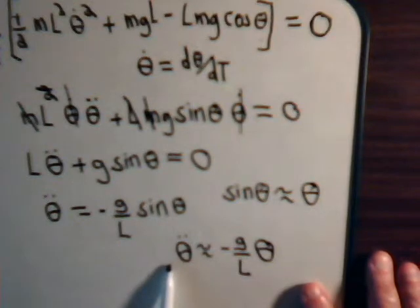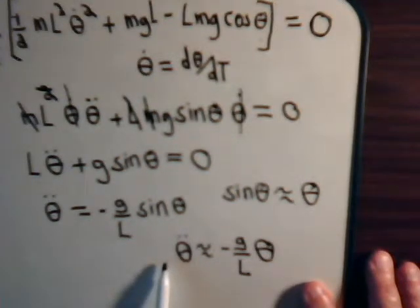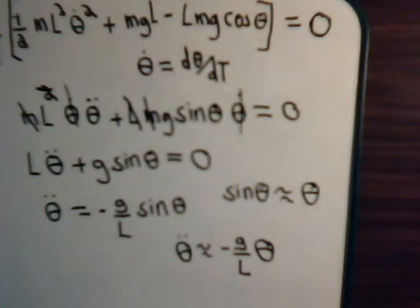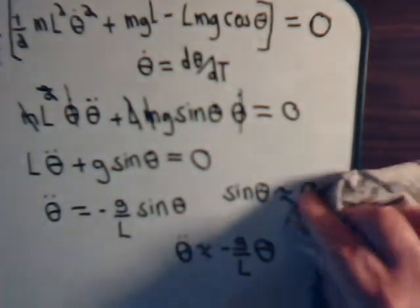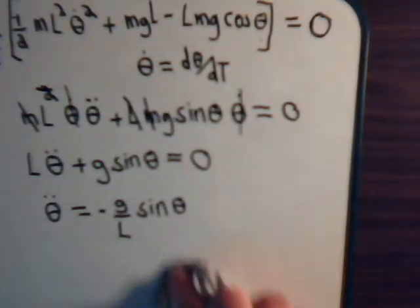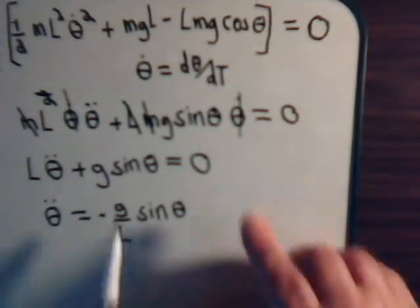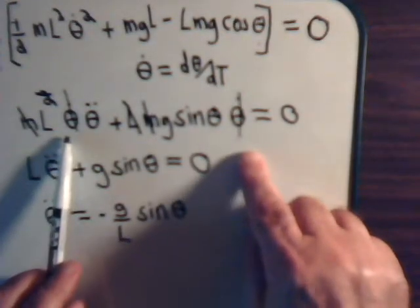That gives a second-order differential equation whose solution involves sine and cosine functions, discussed in video number eight of this series. What we want to do here is solve the equation not just for small angular displacements, but for all angular displacements. Going back to the step before canceling theta-dot, the trick is to put theta-dot back in.